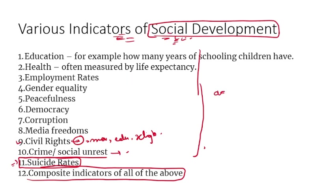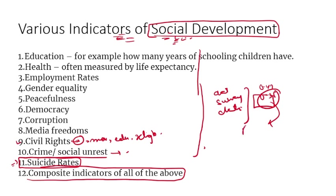These indicators are calculated through surveys. People's data is collected and computed into a number like 0.4 or 0.5, and your country's rank is decided accordingly. These indicators help us compare within a country state-wise, and also make inter-country comparisons — so you can know India's rank on any given index and how many countries are ahead or behind India.